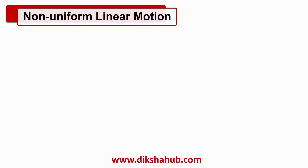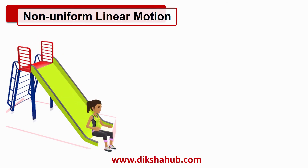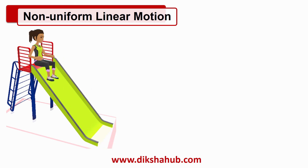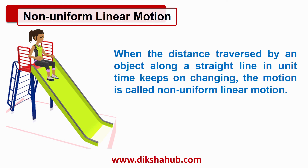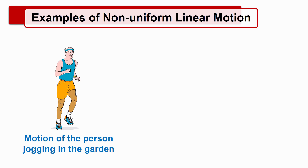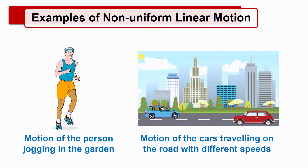The second type of linear motion is non-uniform linear motion. You have all played on a slide — when you come down from the slide, your speed increases continuously. Such motion is non-uniform linear motion. When the distance traversed by an object along a straight line in unit time keeps on changing, the motion is called non-uniform linear motion. Examples include the motion of a person jogging in a garden, and the motion of cars travelling on the road with different speeds. In the next video, we will study non-linear motion and its types. Thank you for watching this video.